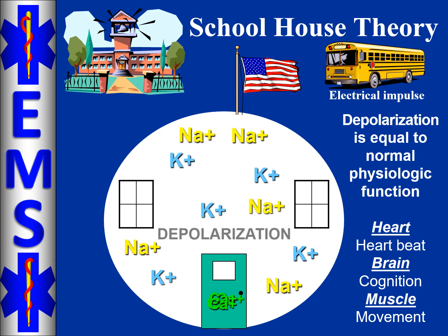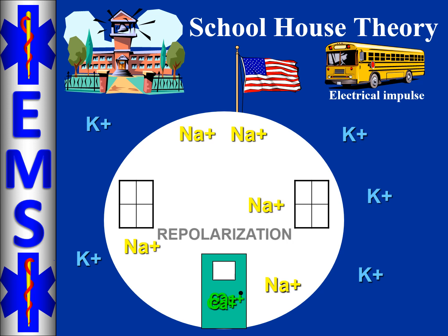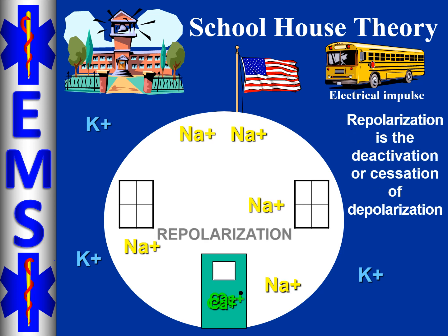Once depolarization occurs with sodium moving in, the school bus driver instructs potassium to move out, which it does. When intracellular potassium moves to the extracellular space, we have a process called repolarization — the deactivation or cessation of depolarization. Once a cell has depolarized, it needs to stop depolarizing. If a cell is forced to continually depolarize, it will either run out of energy and cease to function, or under special circumstances it can be forced to depolarize beyond this point — causing the cell to ultimately die, rupture, and lyse. Once a cell lyses, depending on the cell, it may or may not regenerate.